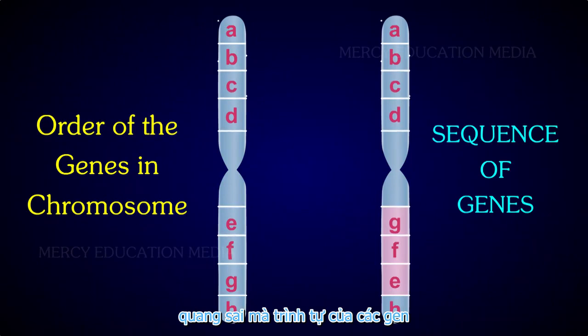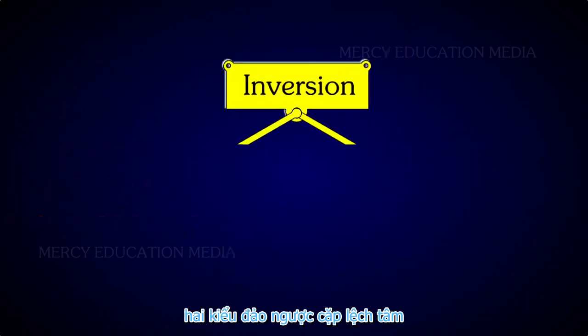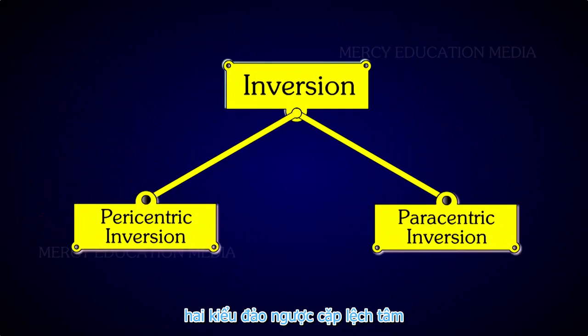the sequence of the genes becomes A, B, C, D, G, F, E, and H. There are two types of inversion: pericentric and paracentric inversion.